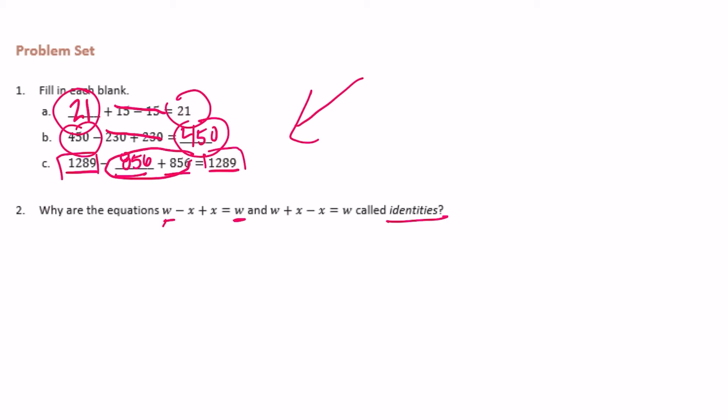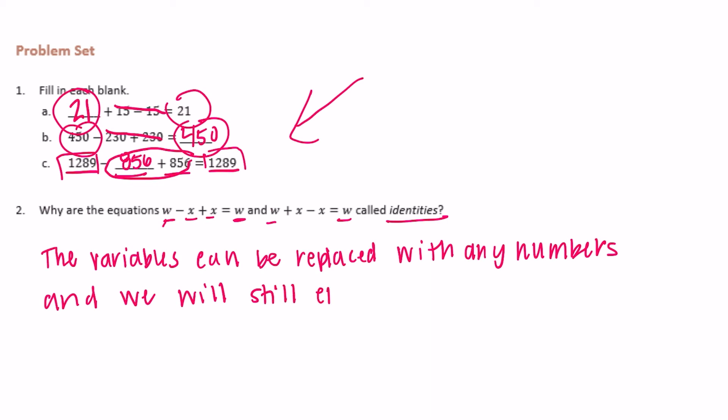If we have w, we get w because we're just subtracting and adding in the same value. So the variables, meaning x and x, can be replaced with any number and we will still end up with the original value.